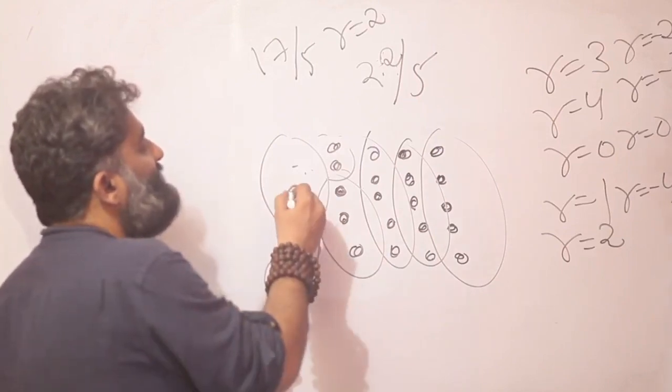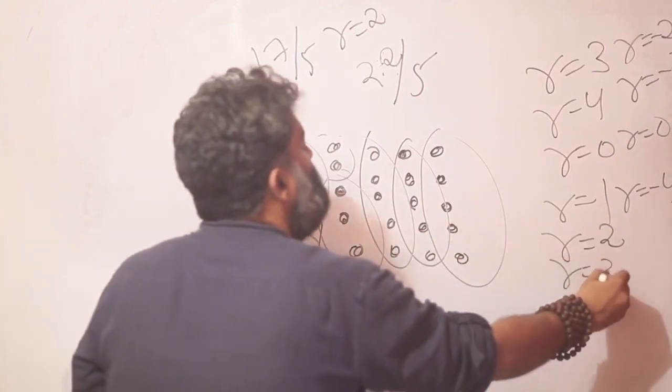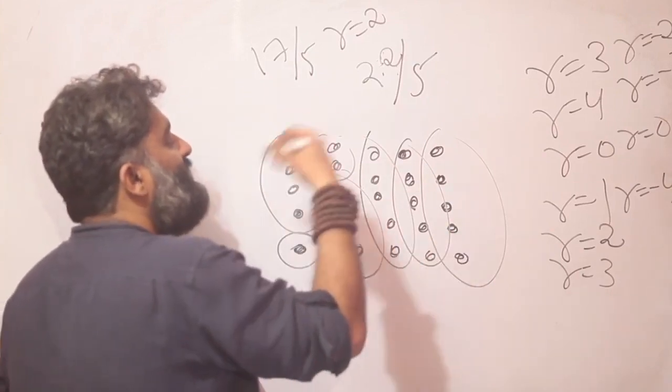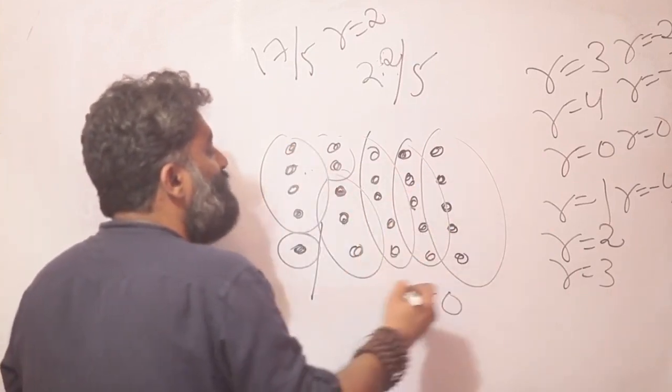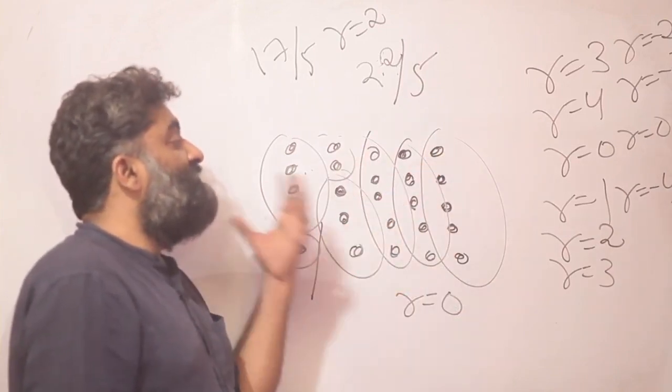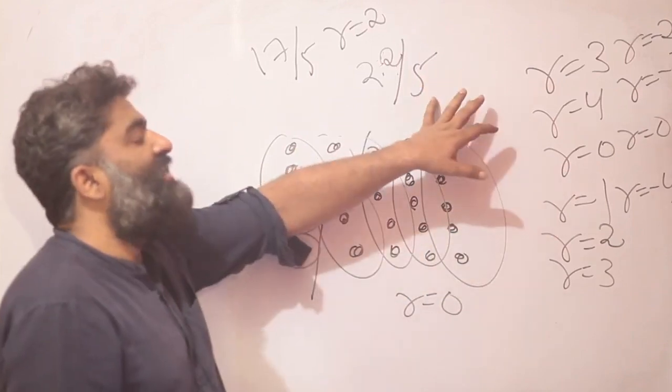And if I now go for 23 toffees, I know the remainder would be 3. At 24 toffees, the remainder would be 4. At 25 toffees, once again the remainder would be 0.